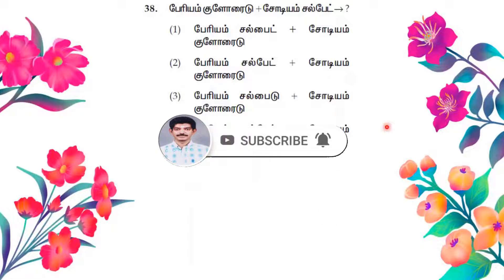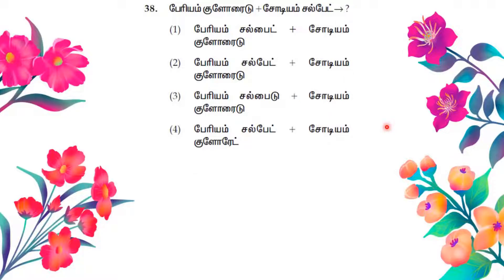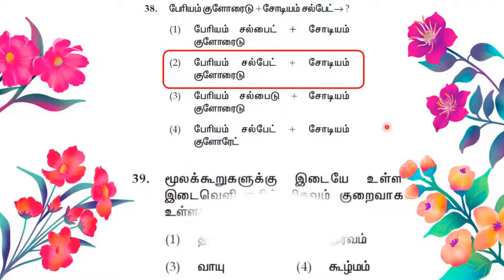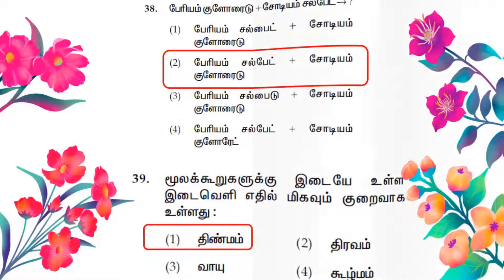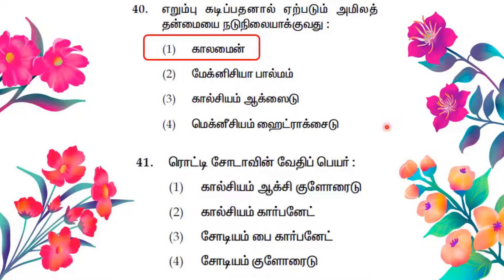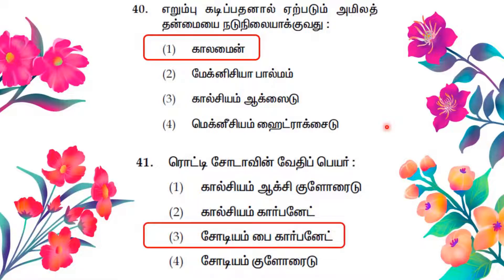Question number 37: barium sulfate plus sodium chloride. Answer option 2: barium sulfate plus sodium chloride. Question number 36 — option 1: soda winty, option 1: calcium oxy chloride, option 2: calcium carbonate, option 3: sodium bicarbonate, option 4: sodium chloride. Answer option 3 is sodium bicarbonate.